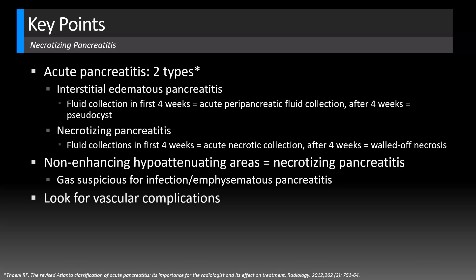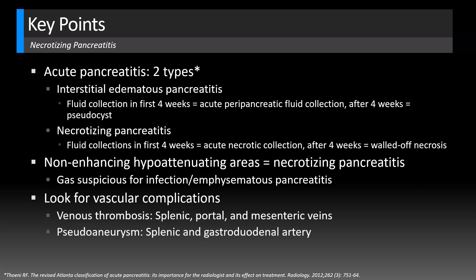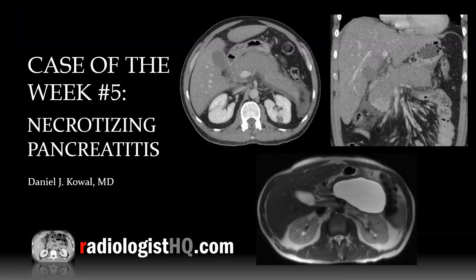Other findings to look for in any pancreatitis case include vascular complications. Venous thrombosis commonly involves the splenic vein, as well as portal and mesenteric veins. Less commonly but critically important is detecting any pseudoaneurysm, which typically involves the splenic and gastroduodenal arteries, because those arteries pass directly through the pancreatic parenchyma.